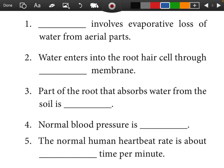Fill in the blanks. Question 11: Transpiration is the evaporative loss of water from aerial parts of the plant. Answer: Transpiration. Question 12: Water enters into the root hair cell through a semi-permeable membrane. Answer: Semi-permeable.